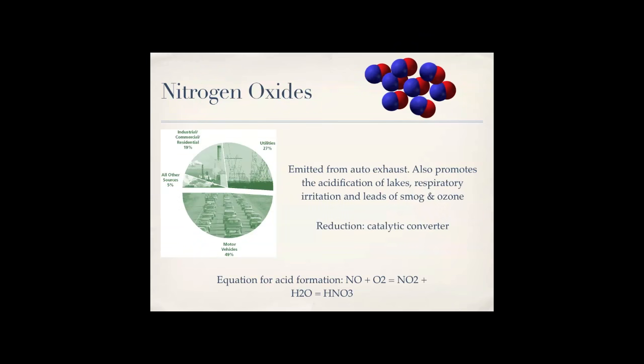So, nitrogen oxides. They're emitted from auto exhaust. It also promotes the acidification of lakes through acid deposition. It causes respiratory irritation and leads to smog and ozone. So, the only way to reduce this is through a catalytic converter, and you can see the equation down there if you need it.